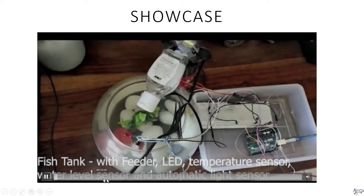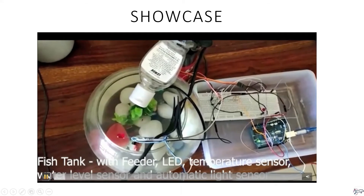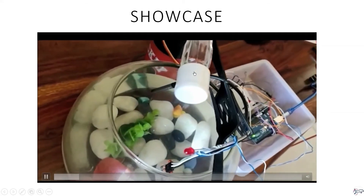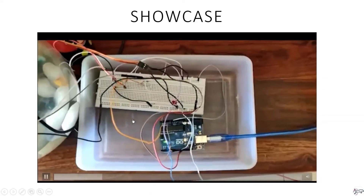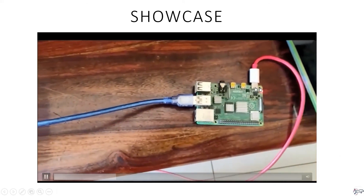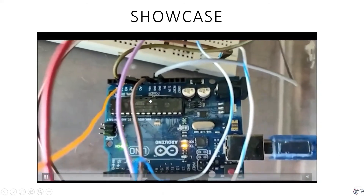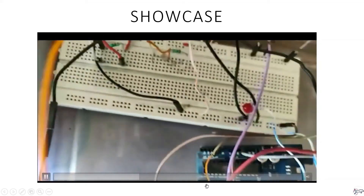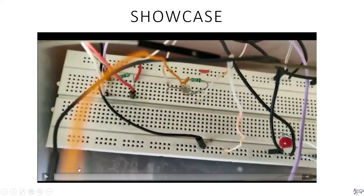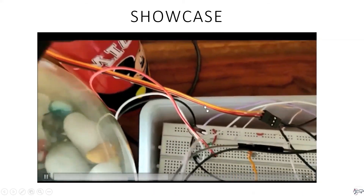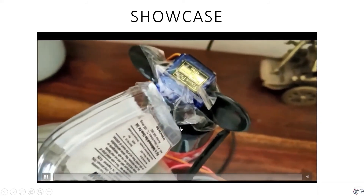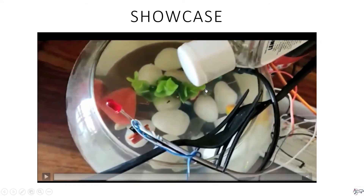Here is a demo of the project. You can see the servo moving the feeder — the small hole in the feeder ensures fish food is dropped into the bowl. All components are connected to the Raspberry Pi and the Arduino via a small breadboard. The LDR is visible there, along with an LED to indicate if the light level is not at optimal brightness.